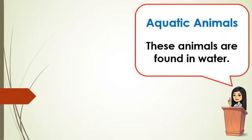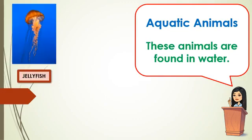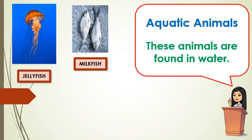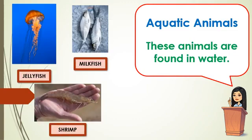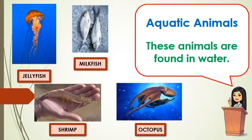Next, we have the aquatic animals. These animals are found or live in the water. Examples of these are jellyfish, milkfish, shrimp, and octopus. Can you name other aquatic animals?